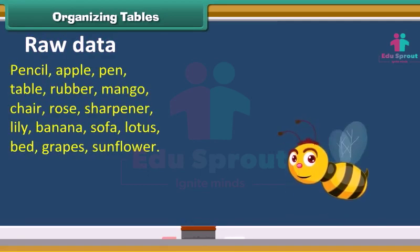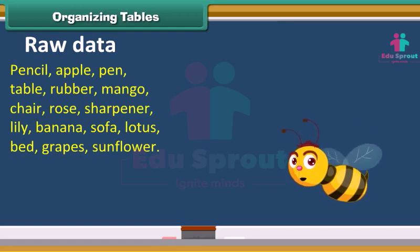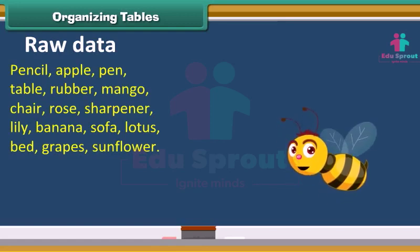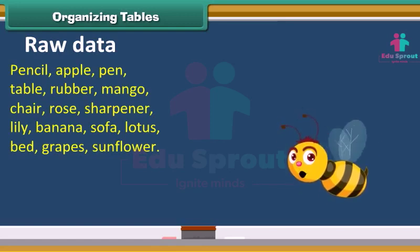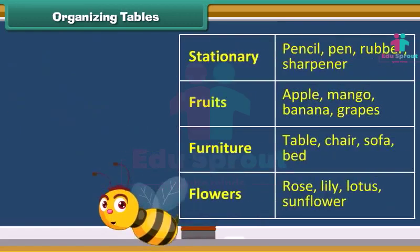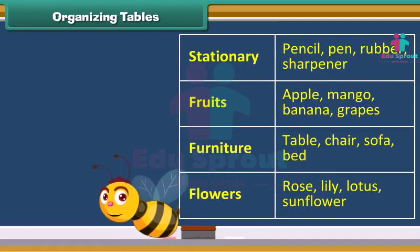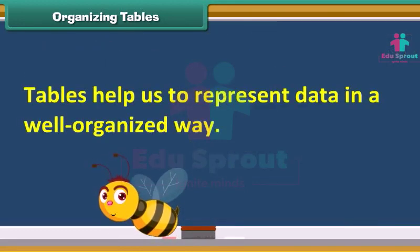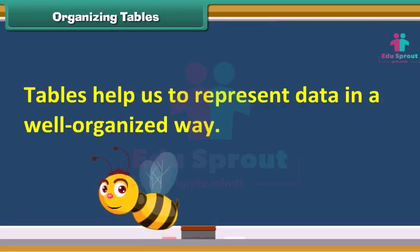The given data represents raw data. We can arrange this data properly by using a table. Tables help us to represent data in a well-organized way.